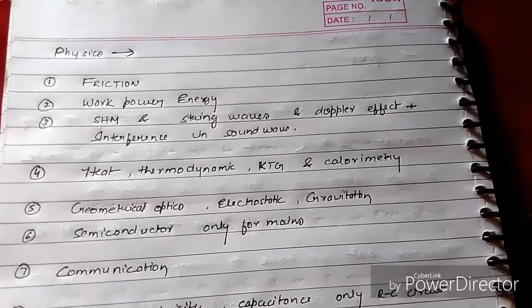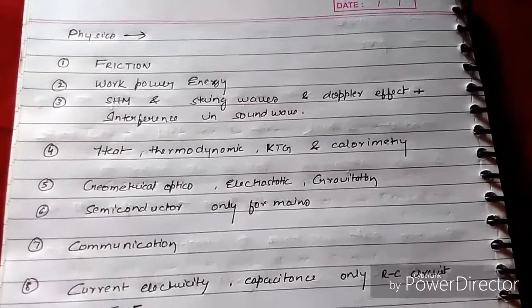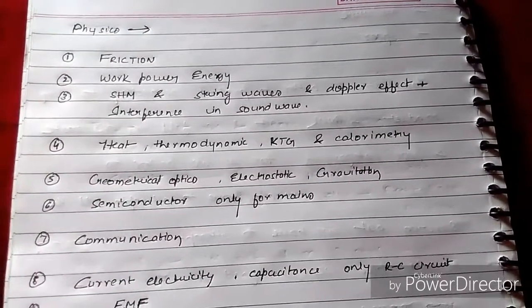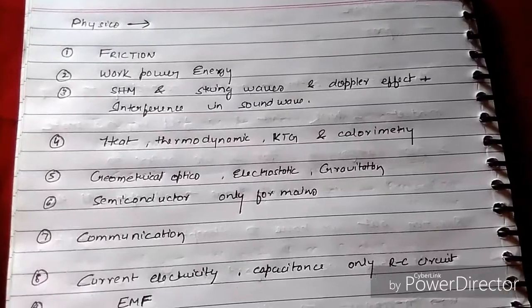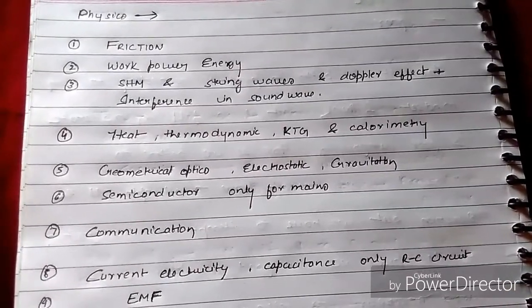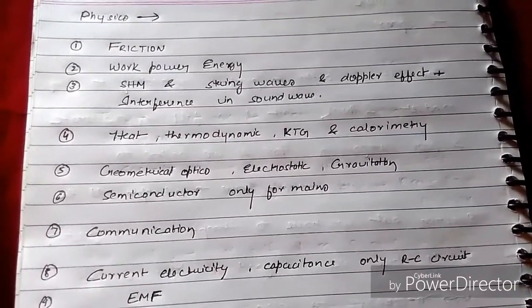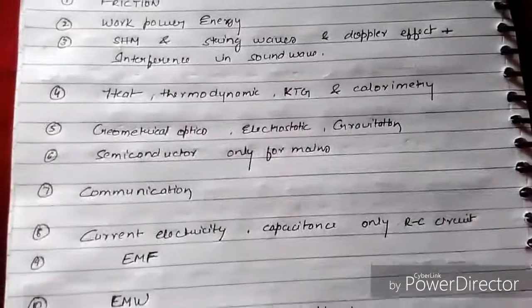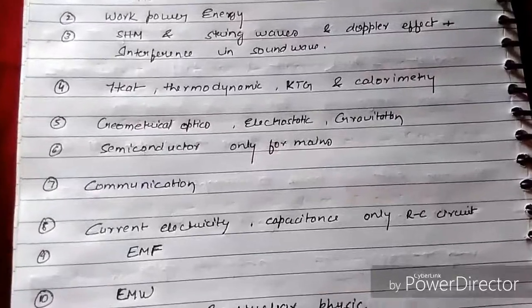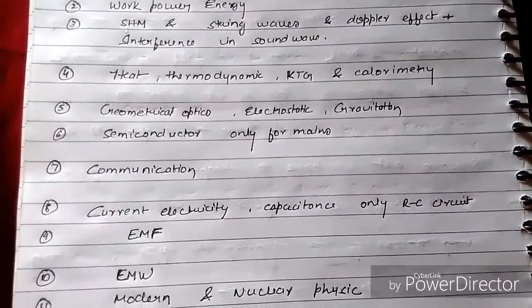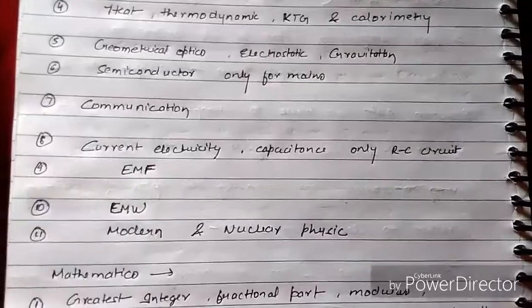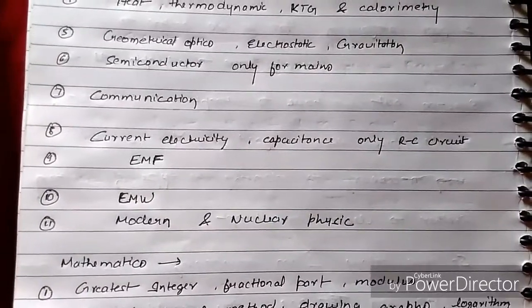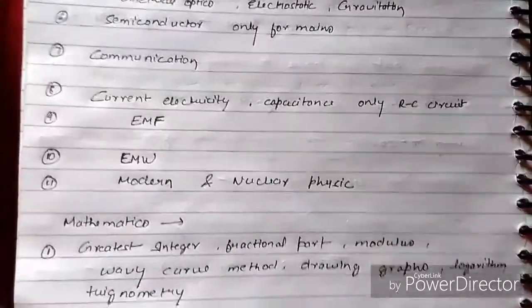Continuing Physics chapters: KTG, calorimetry, geometrical optics, electrostatics, gravitation, semiconductors (only for Mains), communication, current electricity, capacitance (only RC circuit), EMF, EMW, modern and nuclear physics.